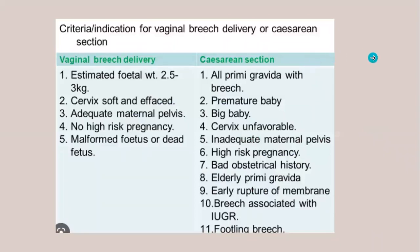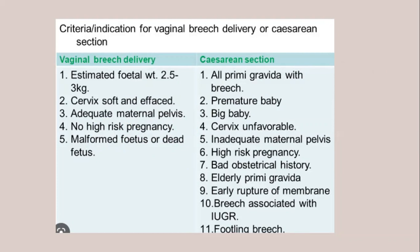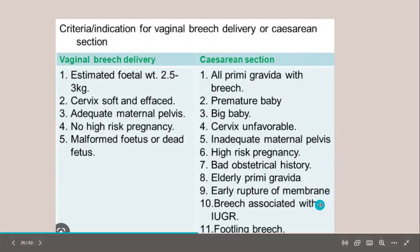Criteria for vaginal breech birth include: previous vaginal breech birth, adequate pelvis, fetal weight between 2.5–3.8 kg (more than 3.8 kg is unfavorable), soft and effaced cervix, adequate maternal pelvis, no high-risk pregnancy, no malformed or dead fetus. Indications for cesarean section include: all primary gravida with breech (term breech trial), premature birth, big babies, unfavorable cervix, inadequate pelvis, high-risk pregnancy, bad obstetric history, early rupture of membranes, breech associated with IUGR, and footling breech.